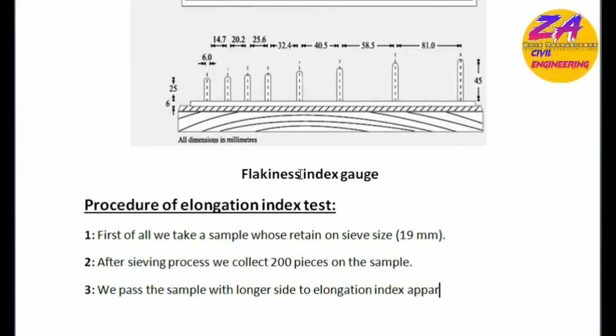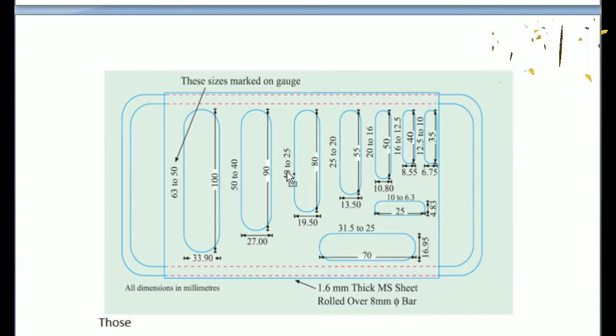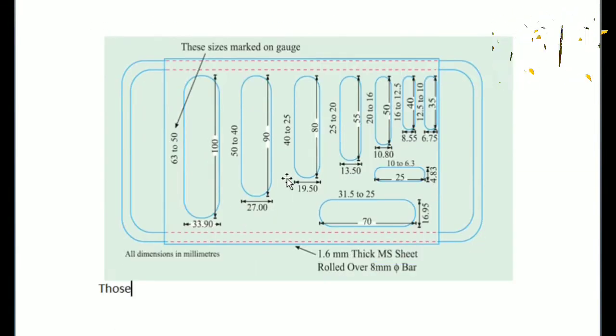Second step: after sieving process we collect 200 pieces of the samples. Third: we pass the samples with the longer side through the elongation index apparatus one by one. Elongated particles are those particles whose greater dimensions prevent passing.